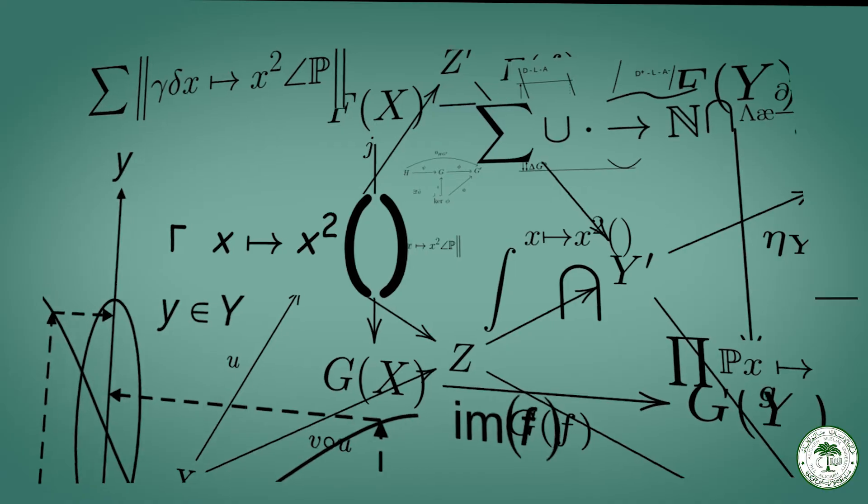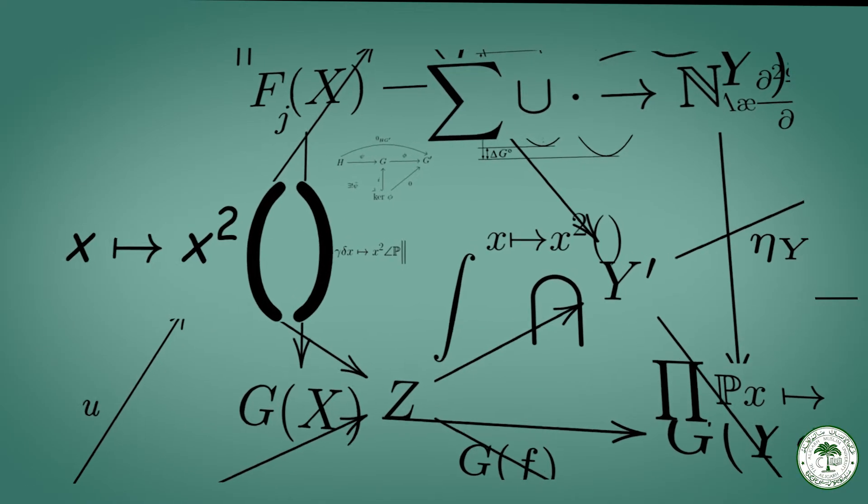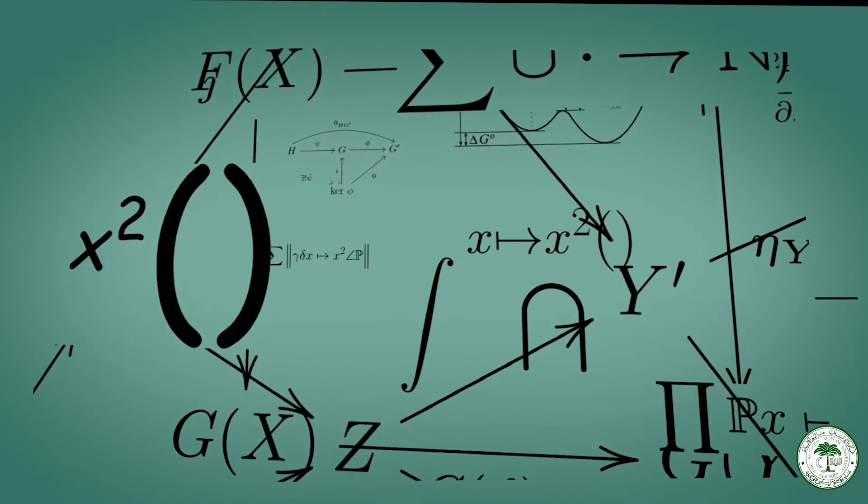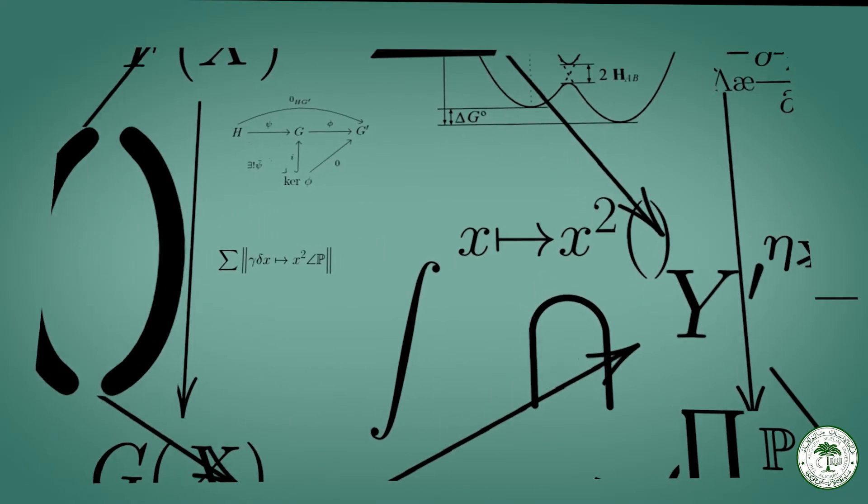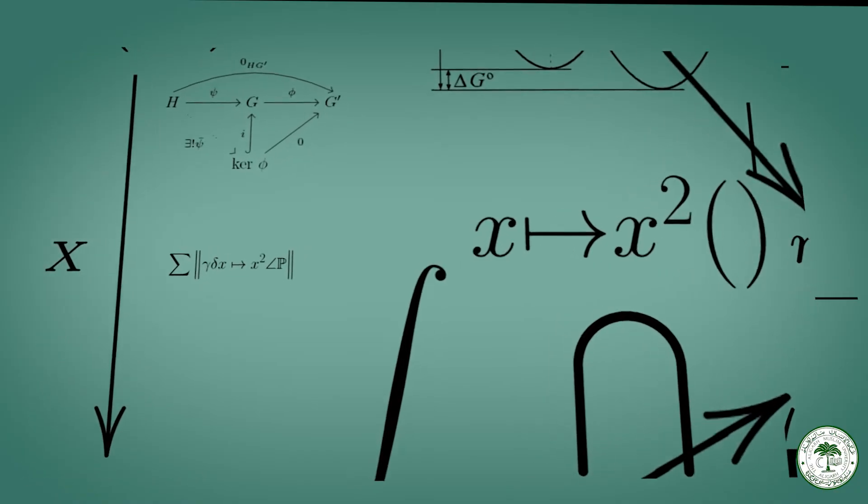After all this we will be moving into the realm of simultaneous equation models where we will be looking at a system of models. Therein we will be looking at the identification and the simultaneity bias.